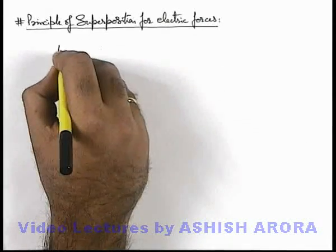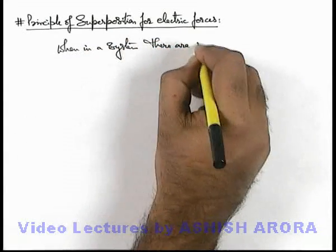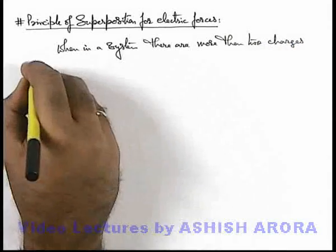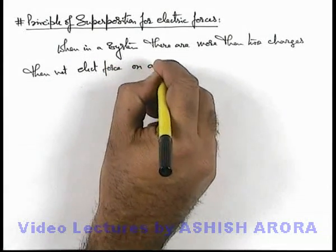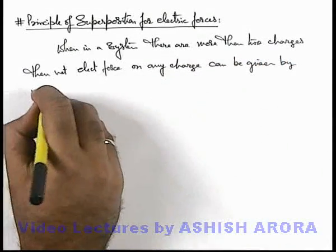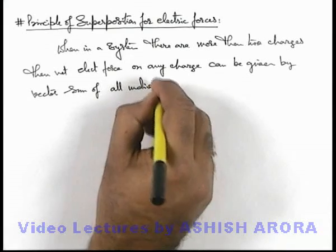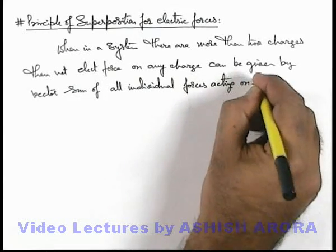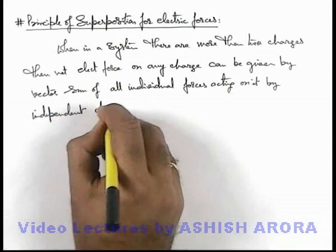Let us first write down its statement. It states: when in a system there are more than 2 charges, the net electric force on any charge can be given by the vector sum of all individual forces acting on it by the independent charges of the system.